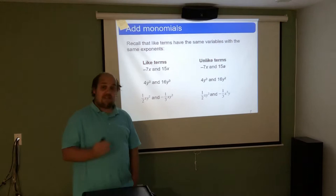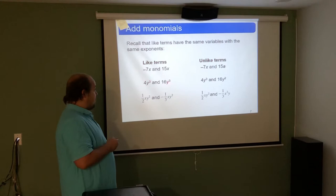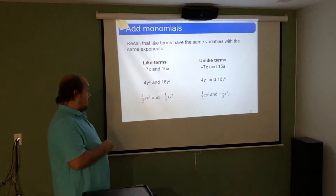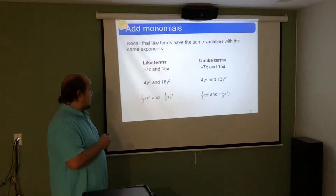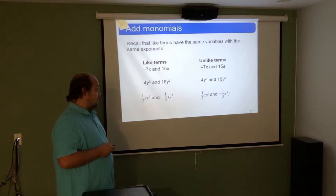When we talk about monomials, we look for things that have the same variable to the same power. Two terms are like terms if they both have x to the same power. They are not like terms if one has an x and the other has an a. Even with two variables, like x to the first times y squared, both variables must match to the same powers. In the unlike terms column, either the variables are different, the powers are different, or the wrong power is on the wrong variable.